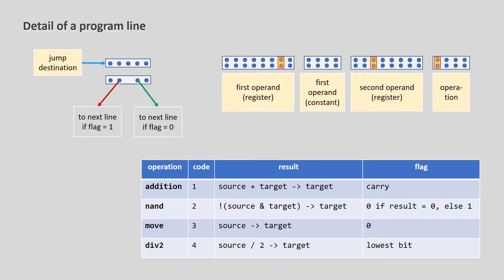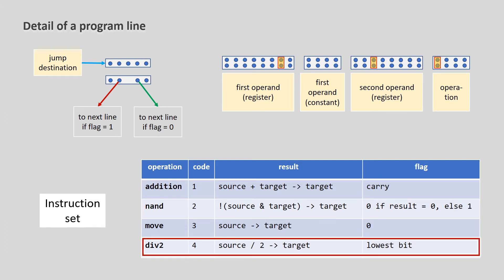Here is the detail of a program line. The four available instructions are addition, logical NAND, memory transfer, and division by two.